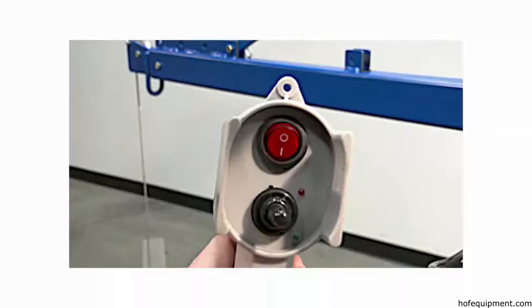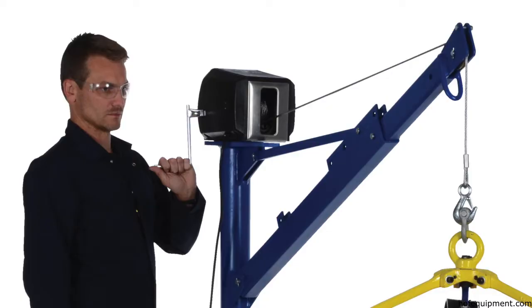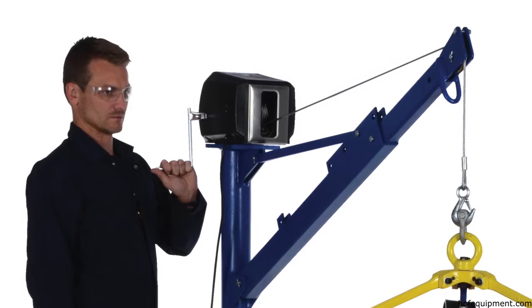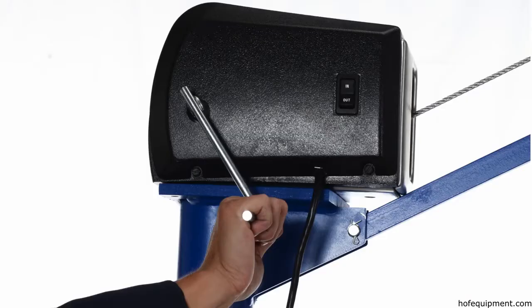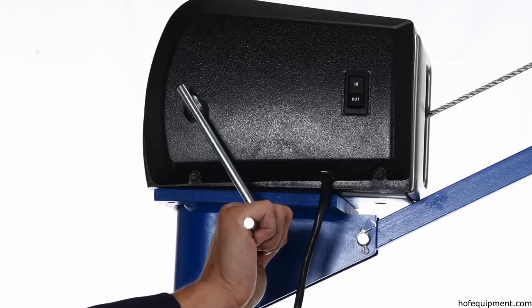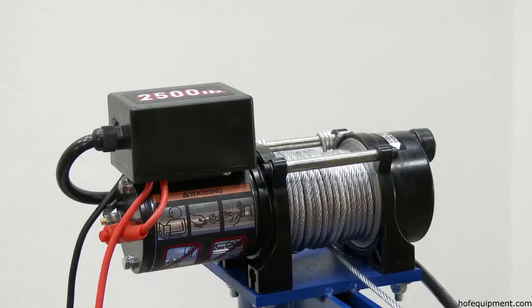Choose either a 12-volt DC 1 horsepower motor with a 6-foot-long non-removable pendant control, or a 115-volt AC with a 1/3 horsepower motor, also with fingertip switch to raise and lower the hook.